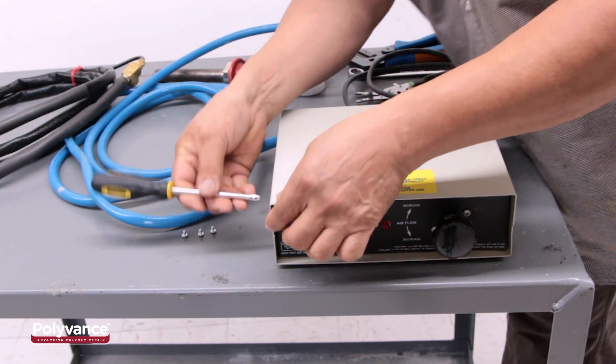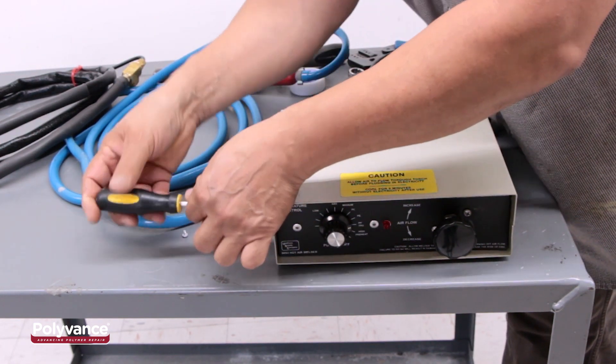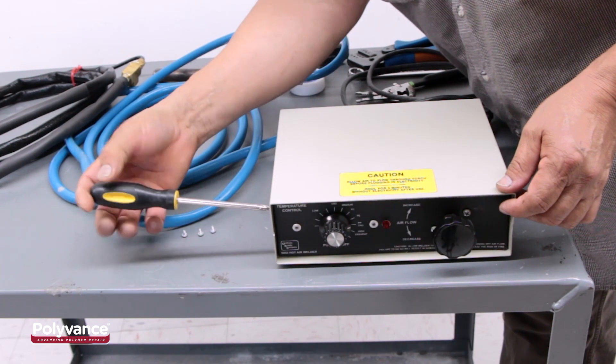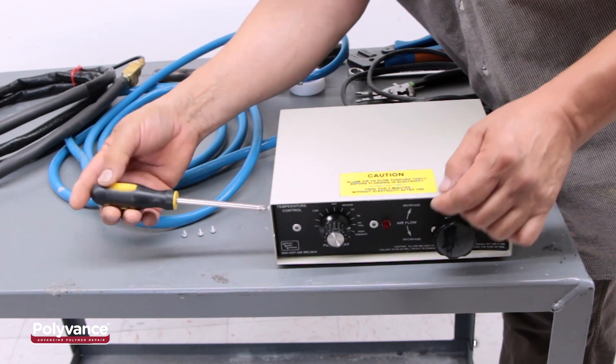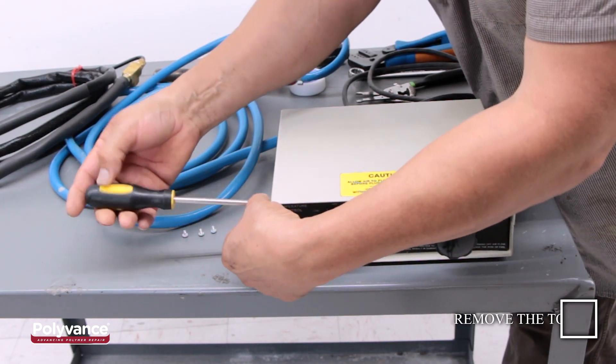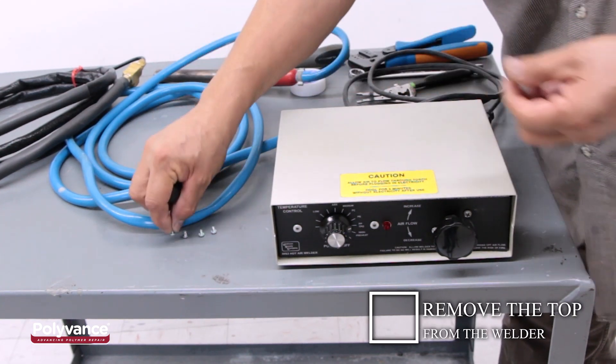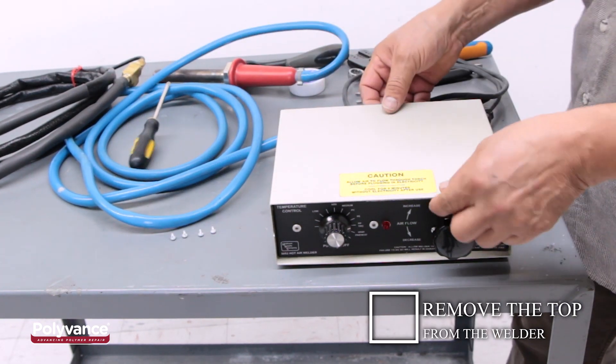This video will show you how to replace the hose and wiring assembly on the 6053 Hot Air Welder. To begin replacing the hose and wiring assembly in your 6053 EasyWeld 2.0 Hot Air Welder,